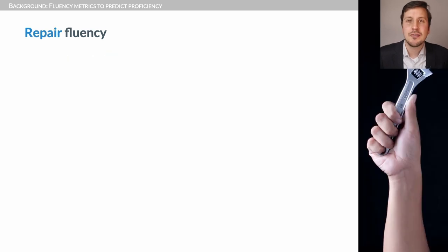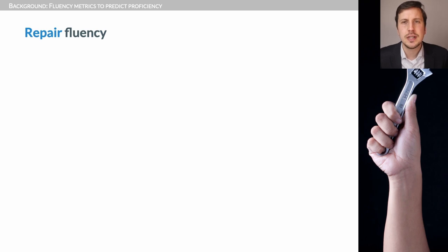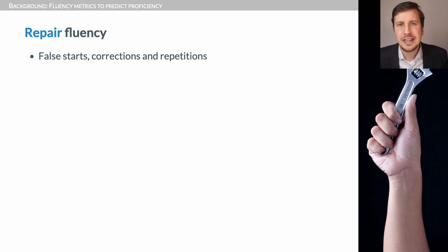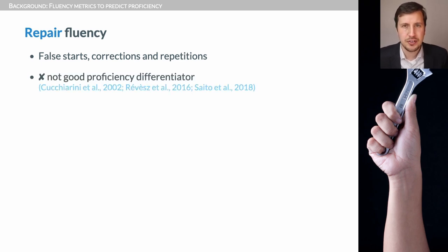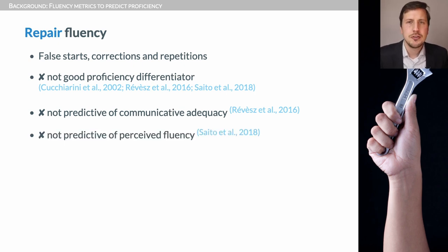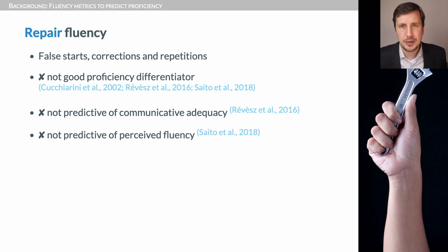Finally, we have repair fluency, which includes false starts, corrections and repetitions. Against popular intuition, repair metrics are actually not good predictors of proficiency, nor do they relate to communicative adequacy or perceived fluency. So we did not include them in this study. We're already skipping many other metrics, but we have something to work with.